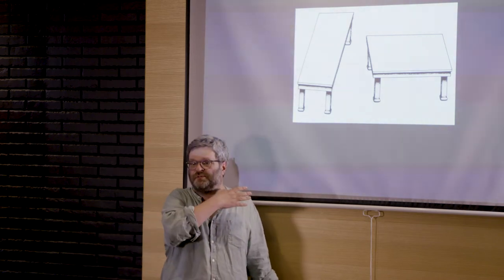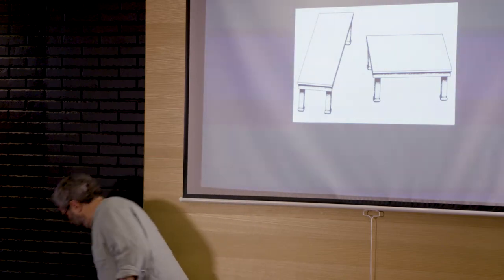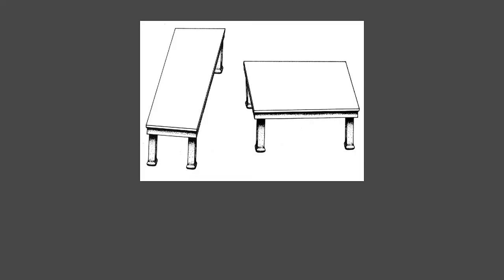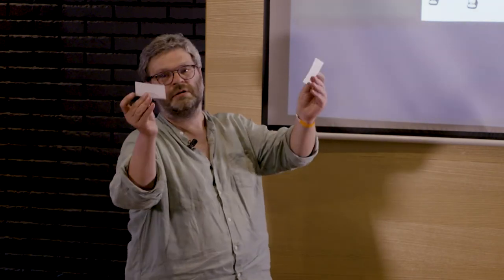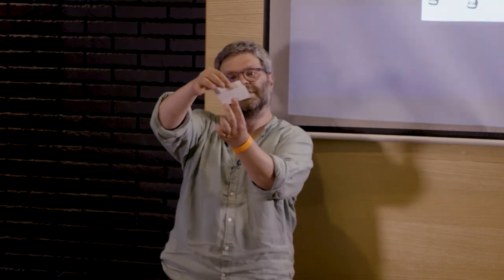So there's this famous illusion. Has anyone here seen this before? A few people. People find it hard to believe that these tabletops are the same shape on the image. That's what's really weird about the illusion. So the only way, if you haven't seen it, the only way I can convince you is by cutting them out. So when you take them together, they're actually the same shape. So why do they appear to have such vastly different shapes?